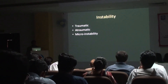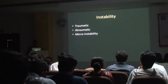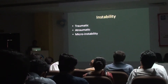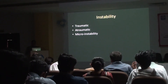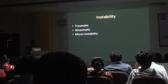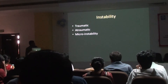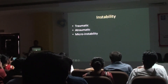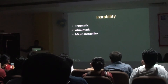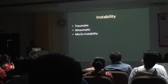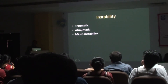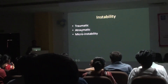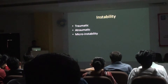Let's move on to instability. You talk about three kinds: traumatic — a guy falls on his outstretched hand and dislocates his shoulder; atraumatic — no elicitable trauma, they come with shoulder pain and on examination will be generally lax; and micro-instability. Most tend to be anterior dislocation — posterior dislocation is only about 5% of cases.